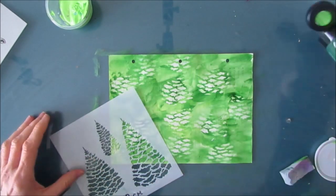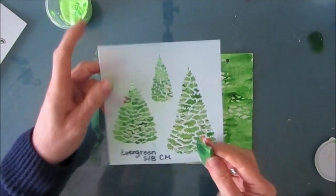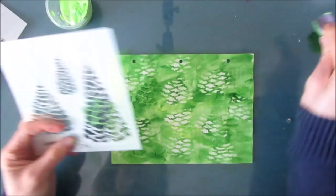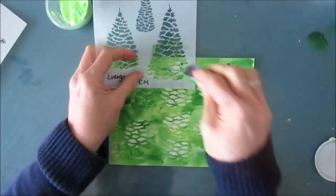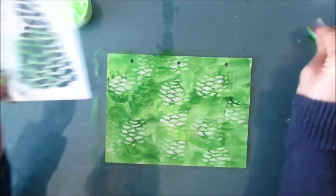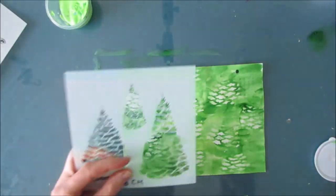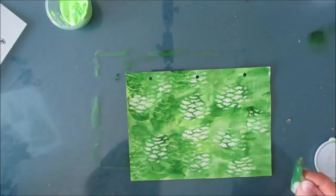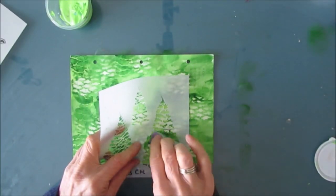Even though I'm using the stencil to create the texture of a Christmas tree, I'm not using the stencil the way maybe that it was intended. Now I'm coming in with the hooker's green and again doing some stenciling. I've got the lights where I removed the paint and now I'm adding some darks back. Just like a Christmas tree there's going to be different shades of green and that's what I want to create on this page.